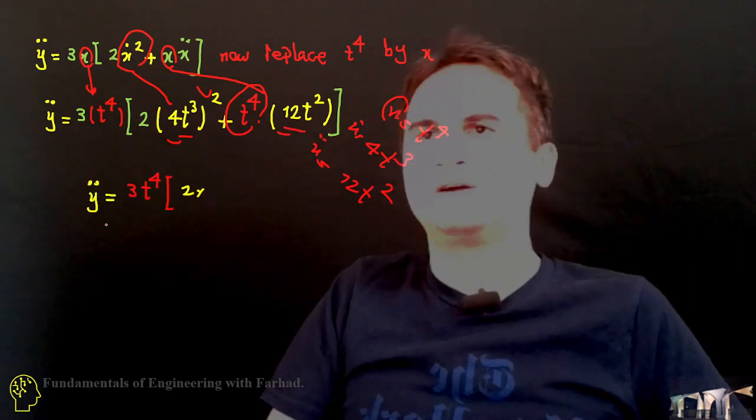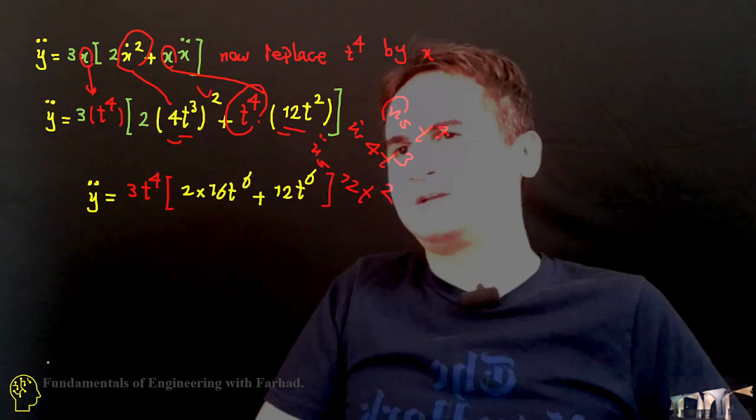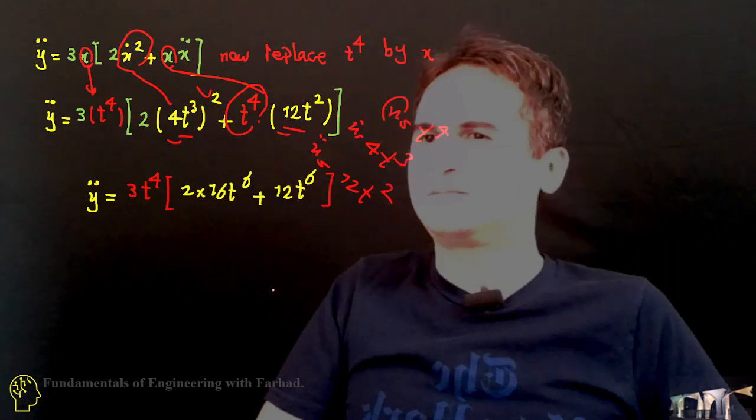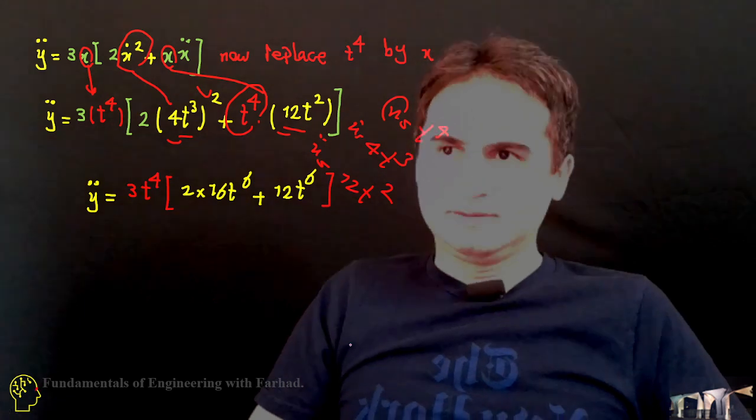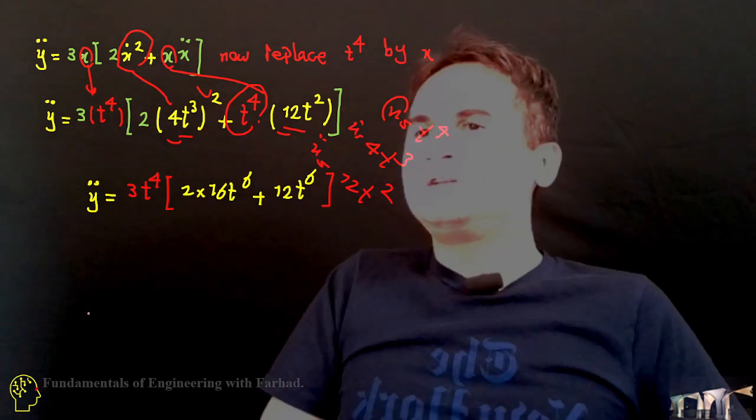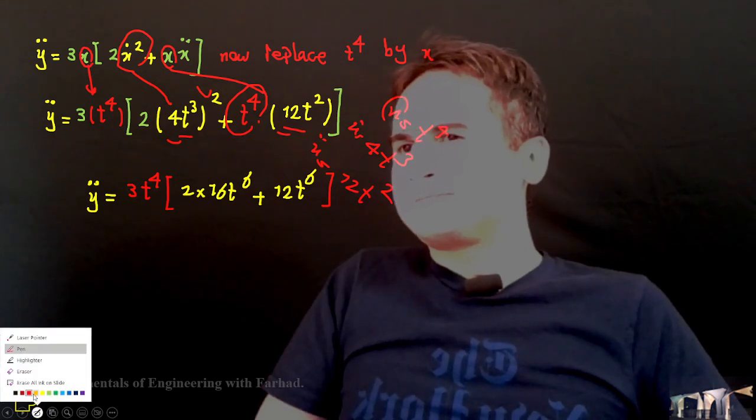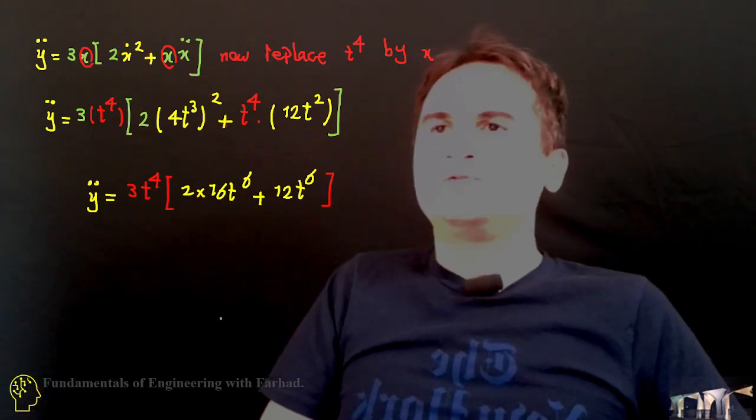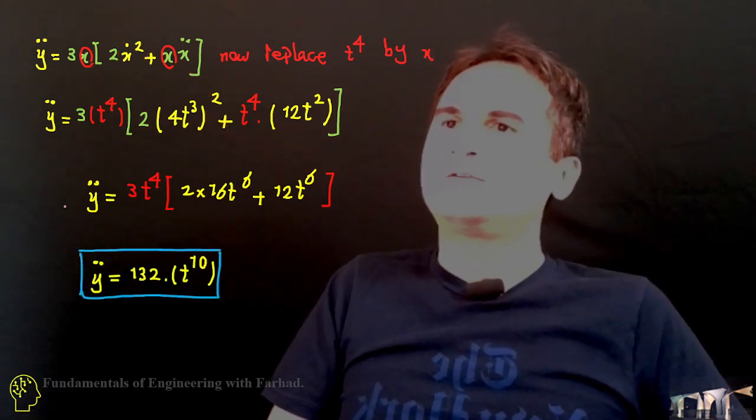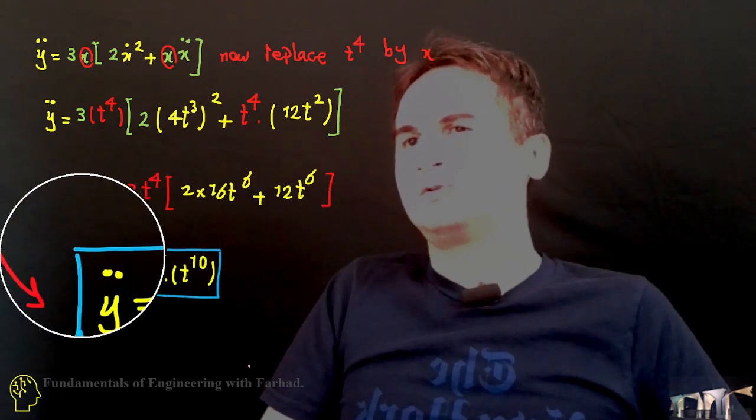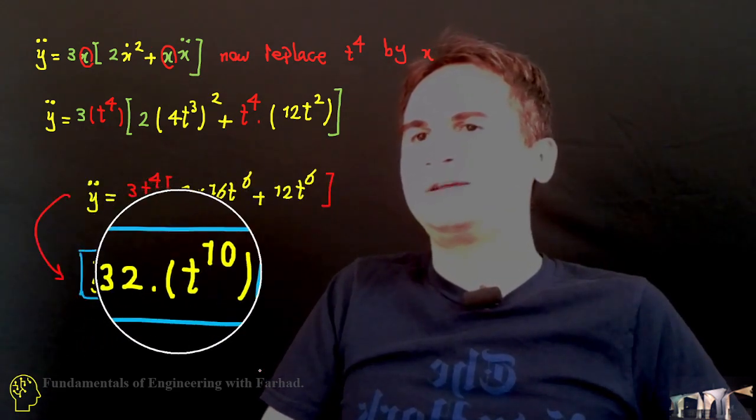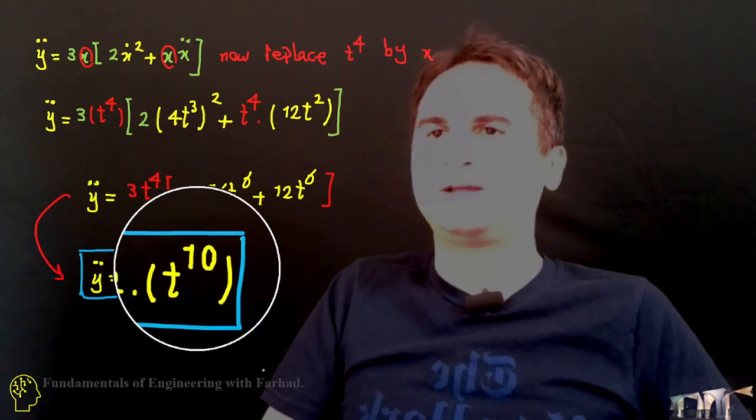Then if you rearrange the equation, it just gives you this equation. And as soon as you have this one, you can rearrange it and report it like y double dot is equal to 132t to the 10th.